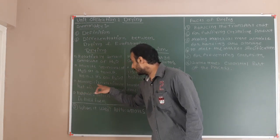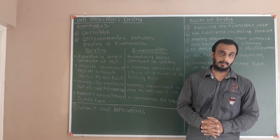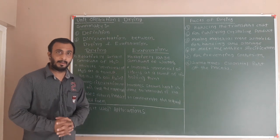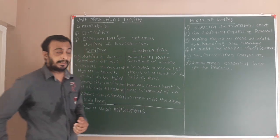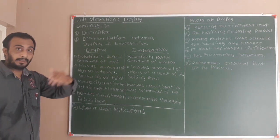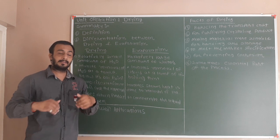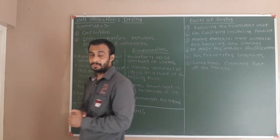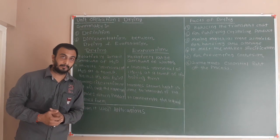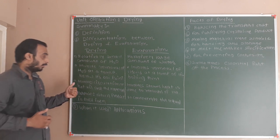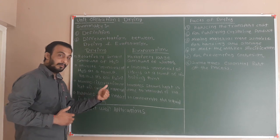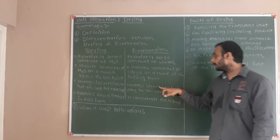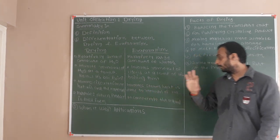Next, Drying involves circulation of hot air over the compound. Steam is the heating medium and air is heated by that steam, so hot air circulates over the material. We will discuss a number of equipments of drying systems, and in a tray dryer we will see that hot air is circulated over the material. Whereas in Evaporation, steam is used and heat is applied to remove the liquid.